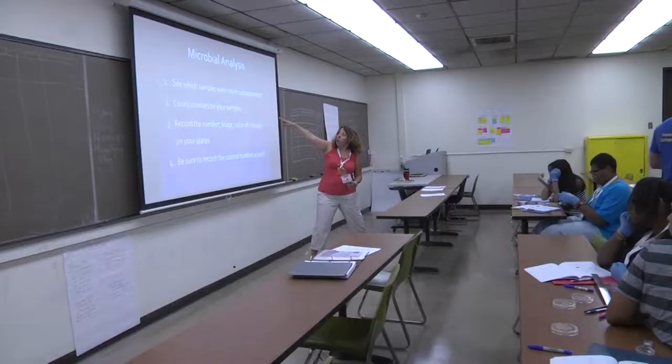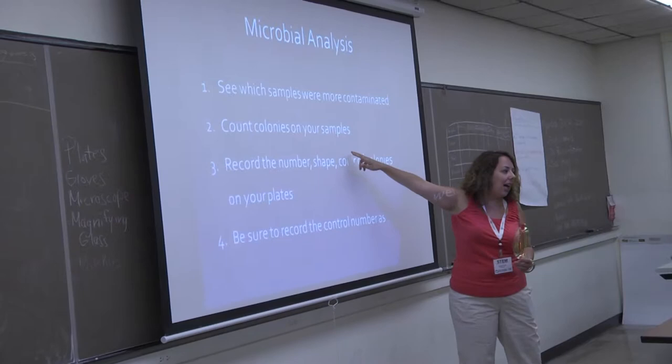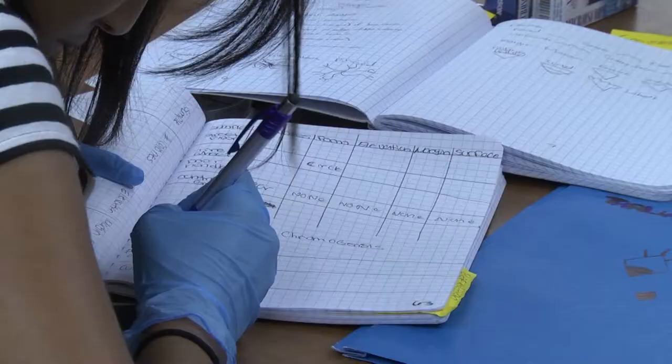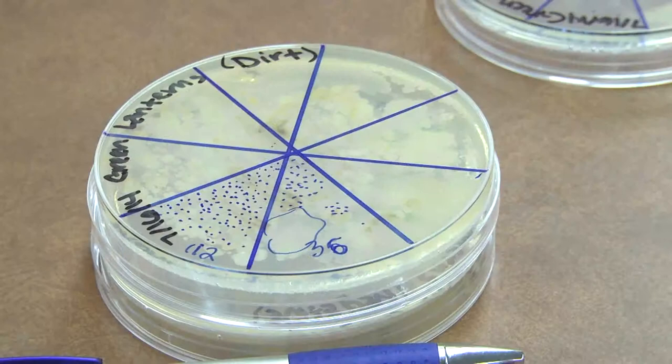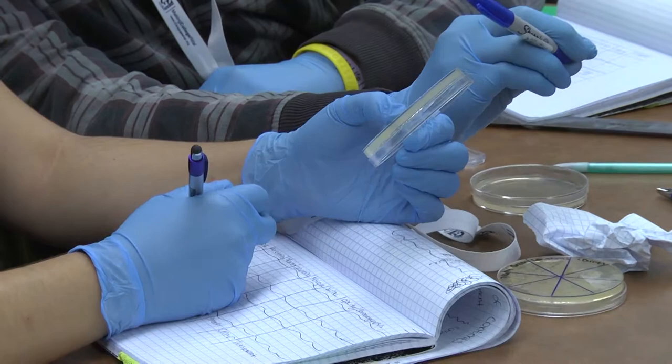Which samples are more contaminated? Count the colonies on your samples — you can't do that until you divide them. So this group has one plate done. It's kind of fun to be able to see a mutation.